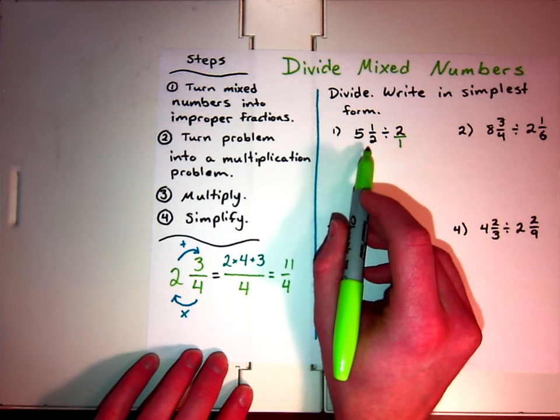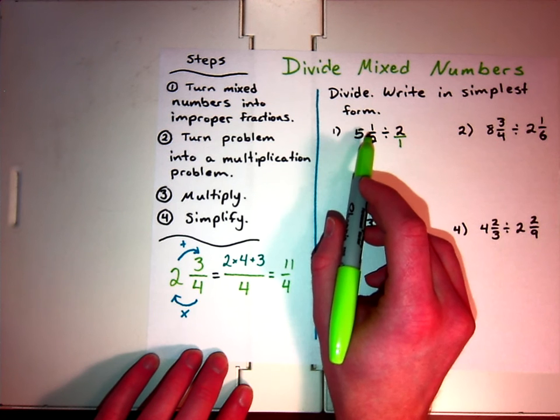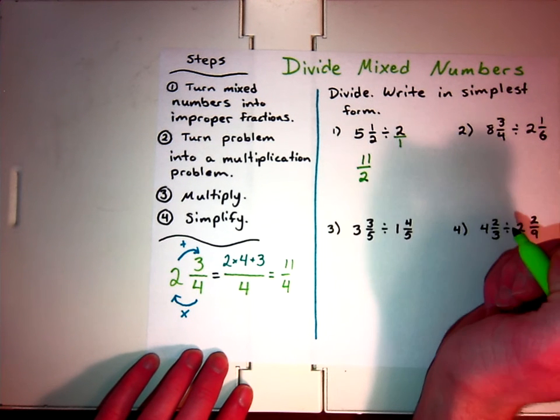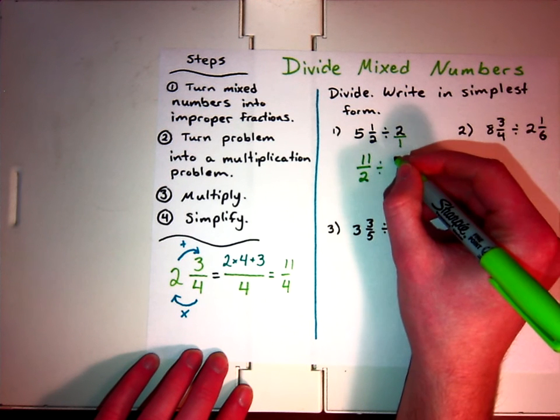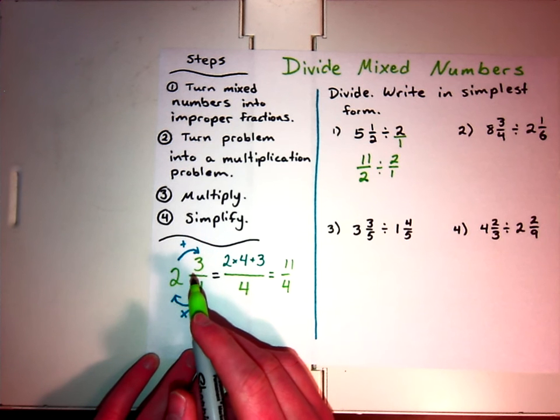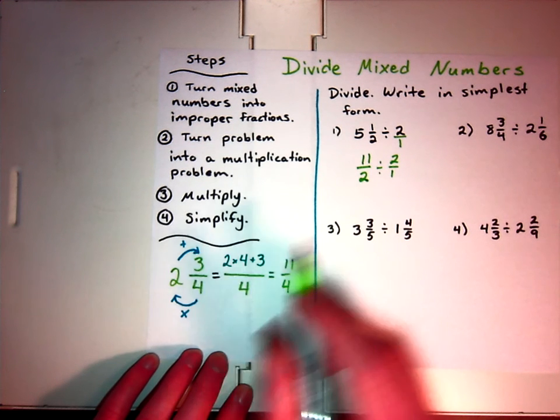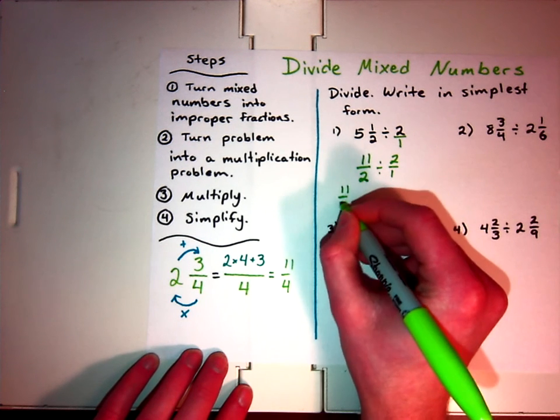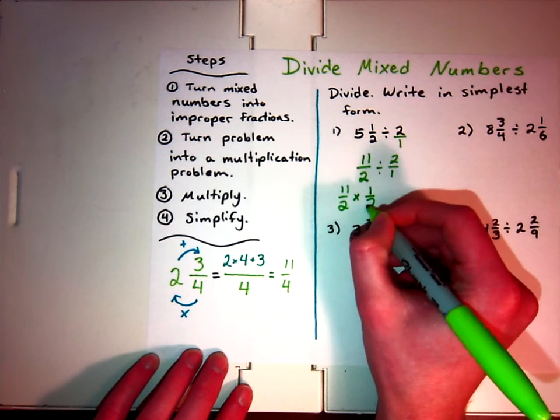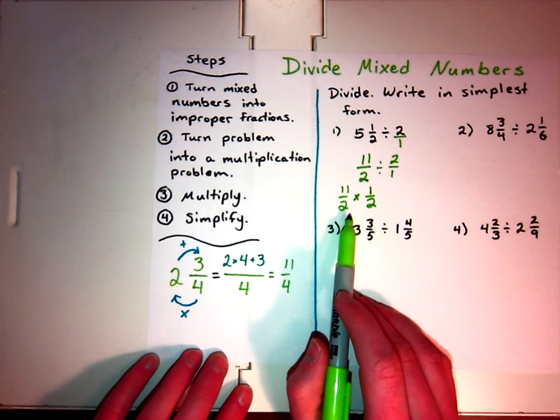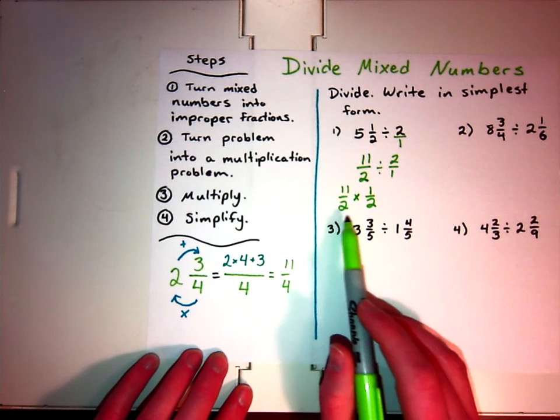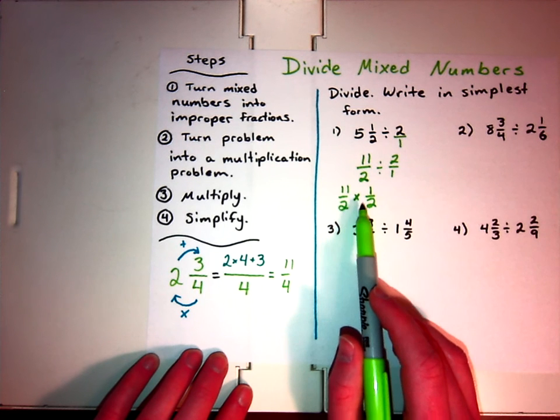So 5 times 2 is 10. Add it to the numerator, which is 1. 10 plus 1 is 11. My denominator remains the same. Okay, and I can still write it as a division problem if I wanted, knowing that step 2 is turn that problem into a multiplication problem. So 11 over 2 multiplied by, well, the reciprocal of 2 over 1 is 1 over 2. I need to look, are there any factors that can cancel out? No, 11 and 2 do not have a common factor, and neither does 2 and 1.